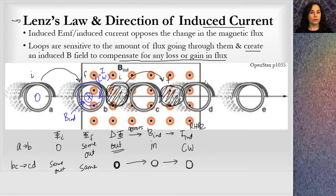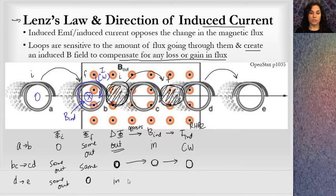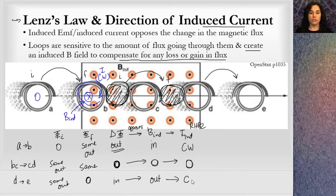From position D to position E: initial flux is some out of the page through the loop. When it gets to position E, the loop is no longer in the magnetic field, so flux is zero. The change is into the page — we had some out, and to get to zero, we had a change of in. The induced magnetic field opposes that change, so it will be out of the page. Using the right-hand rule with my thumb out, my fingers curl counterclockwise — giving a counterclockwise current as the loop exits the field.